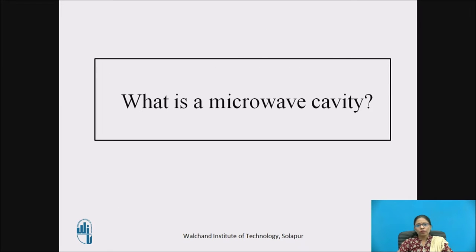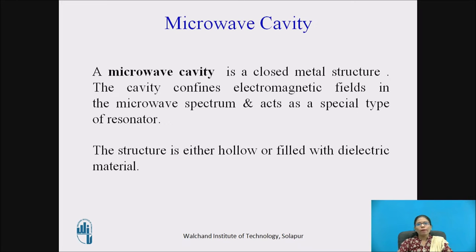Let us look at what is a microwave cavity. A microwave cavity is a closed metal structure. The cavity confines electromagnetic fields in the microwave spectrum and acts as a special type of resonator. The structure is either hollow or filled with dielectric material.